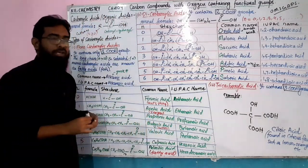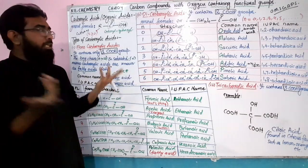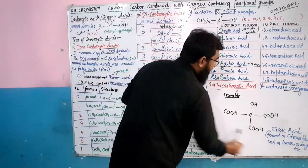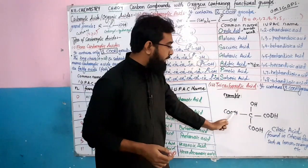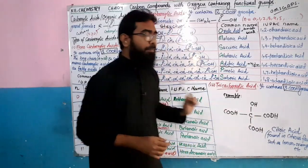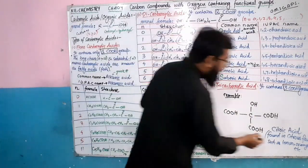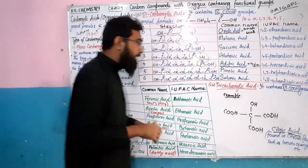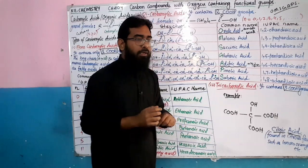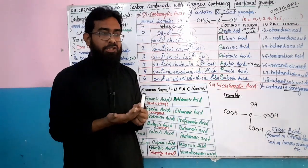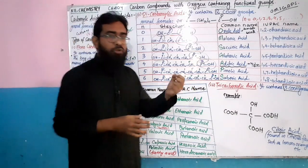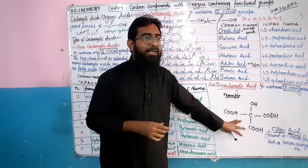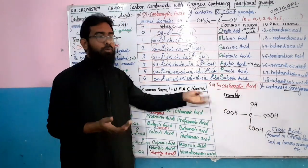Third, tricarboxylic acid. Tricarboxylic acid is quite simple — it has three COOH groups. We have one example: citric acid. You can see in the structure that COOH is attached in three places — one, two, three. So it is a tricarboxylic acid. Citric acid is a very famous organic compound found in citrus fruits like lemon and orange. The sour taste of orange juice and lemon comes from citric acid.